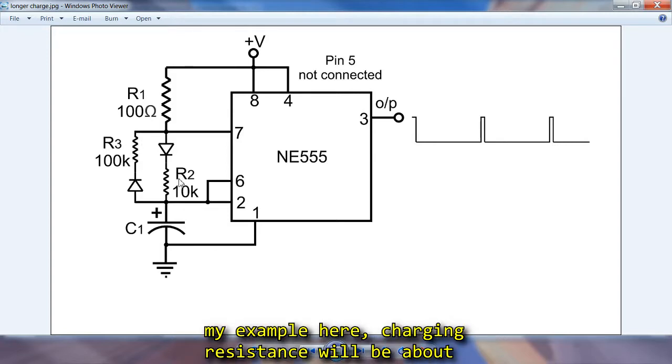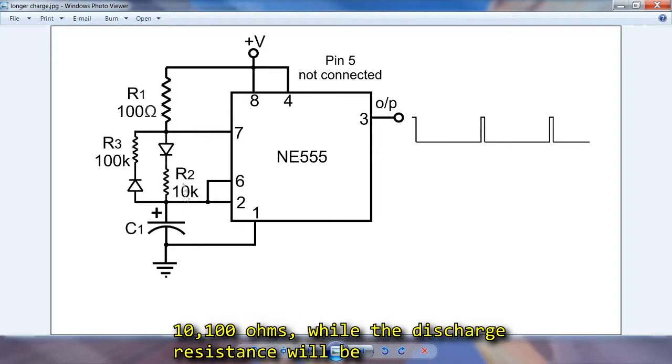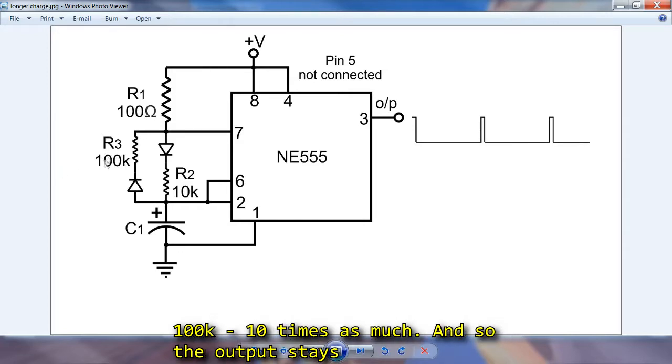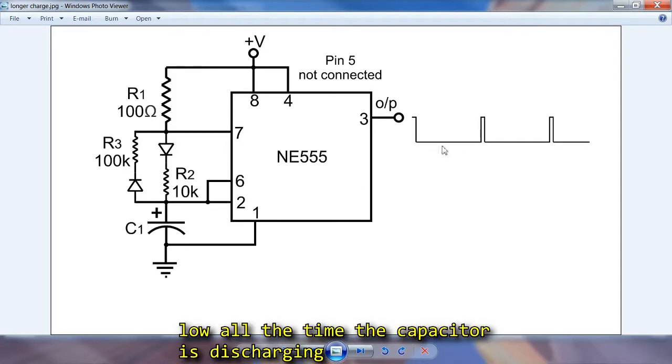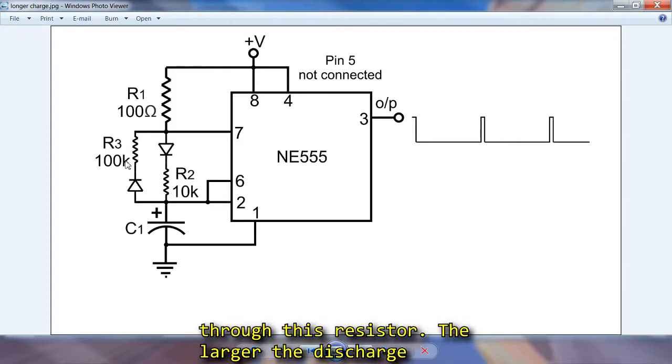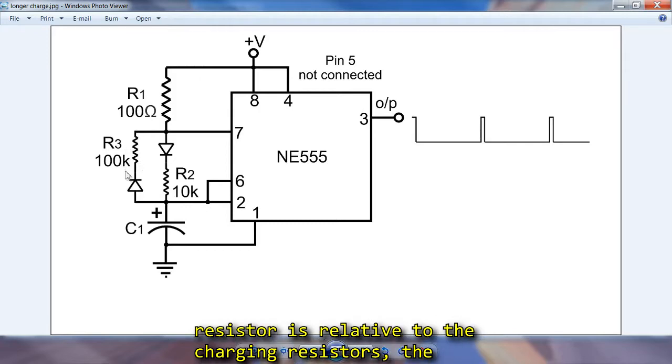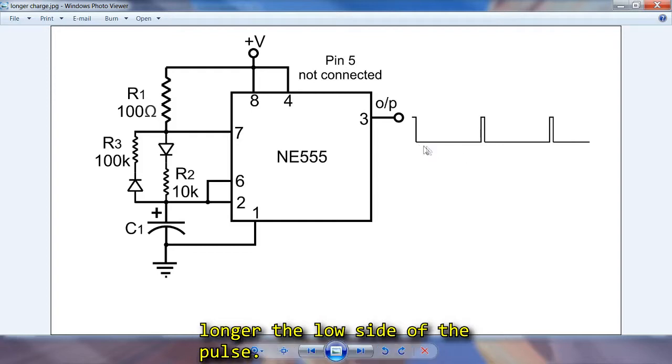So in my example here, charging resistance will be about 10,100 ohms, while the discharge resistance will be about 100,000, 10 times as much. So the output stays low all the time the capacitor is discharging through this resistor. The larger the discharge resistor is relative to the charging resistors, the longer the low side of the pulse.